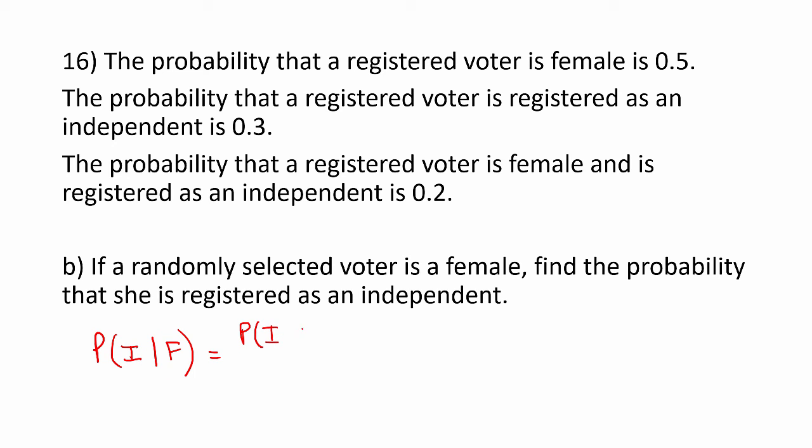The probability that a voter is both was 0.2. The probability a voter is female is 0.5. So we have 0.2 divided by 0.5, which is 0.4.